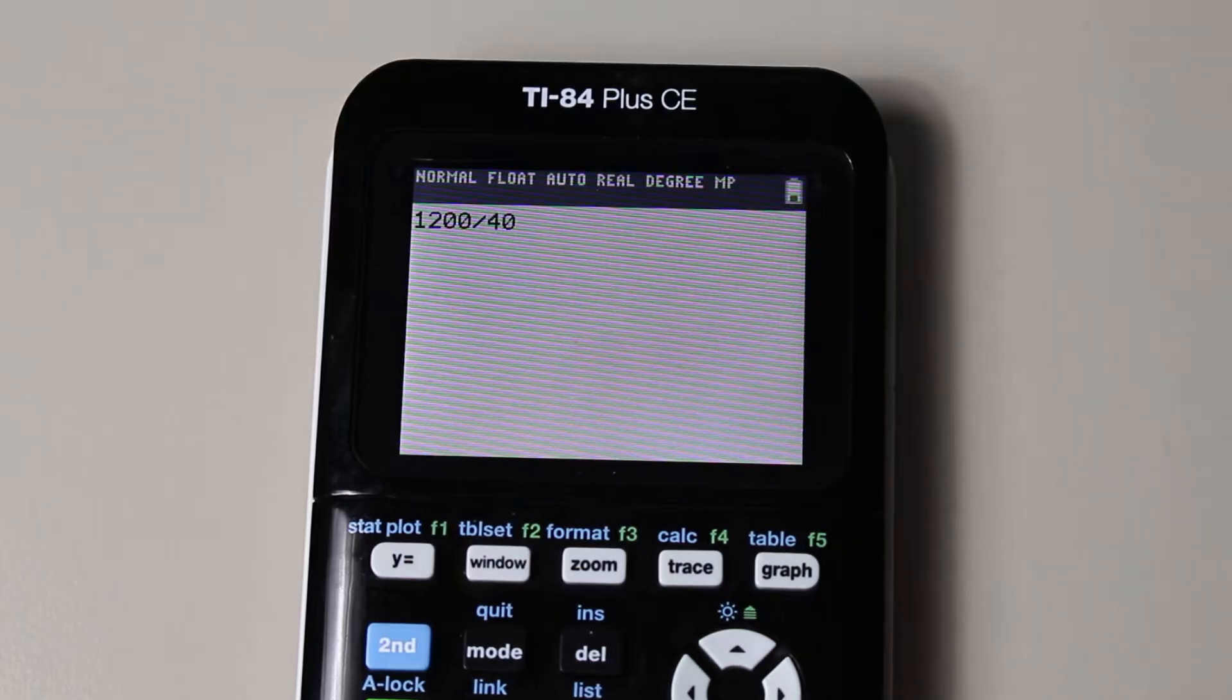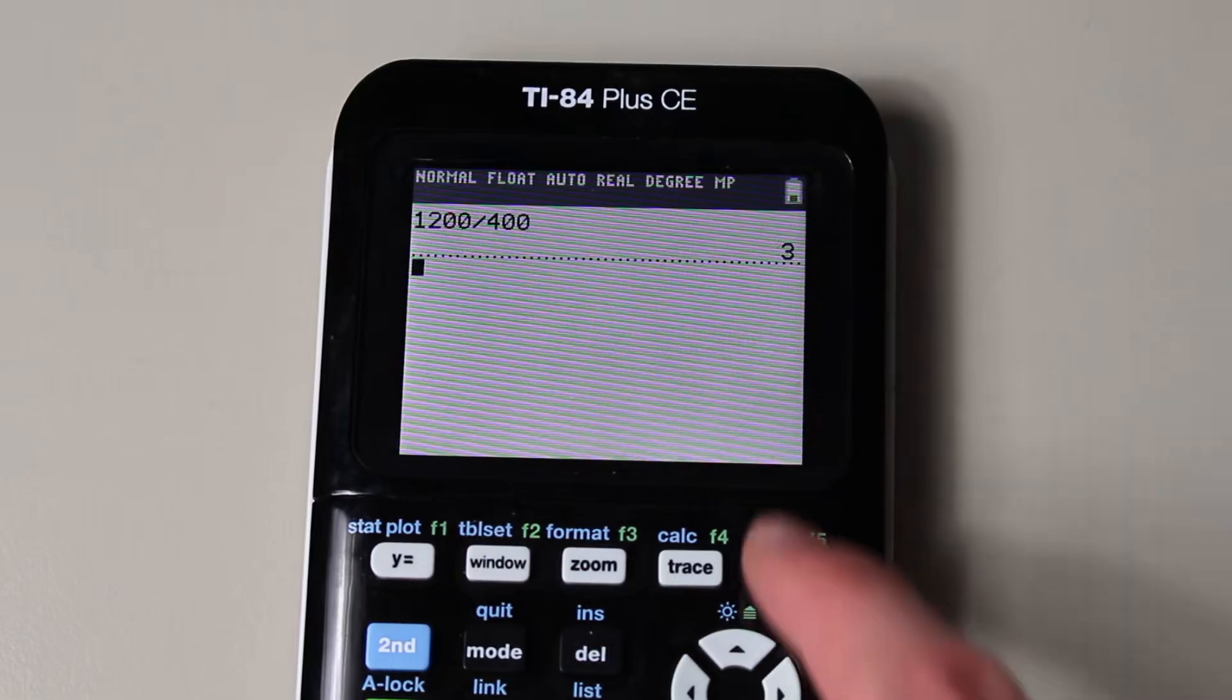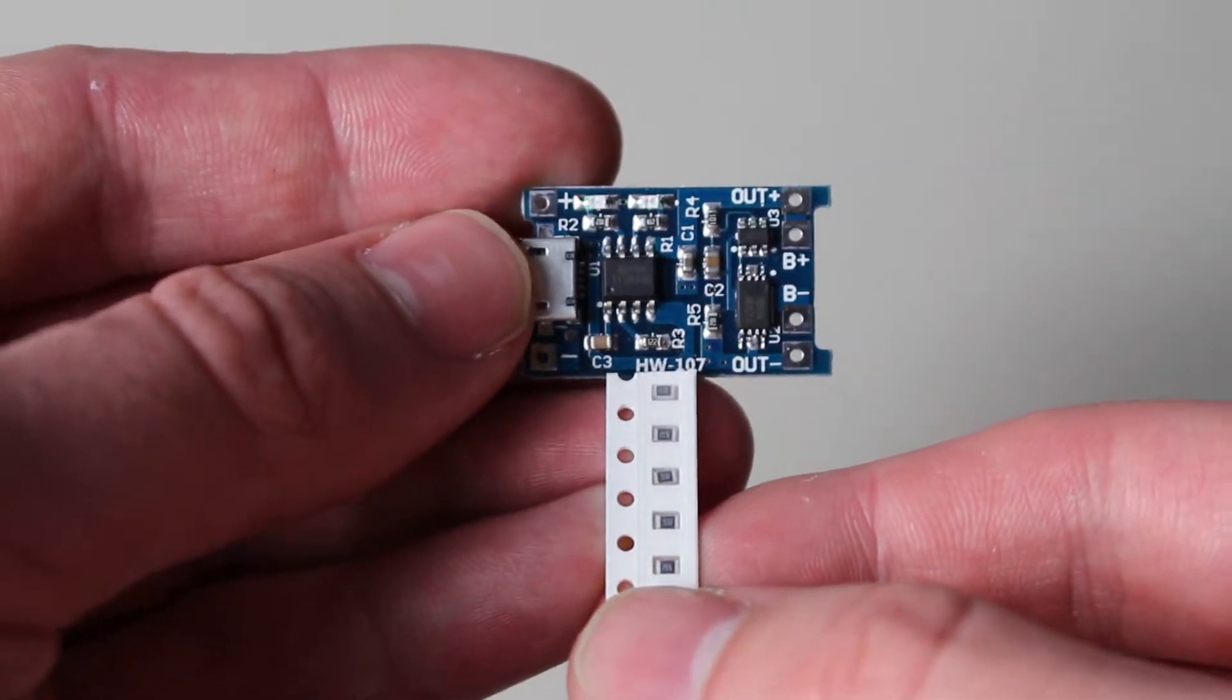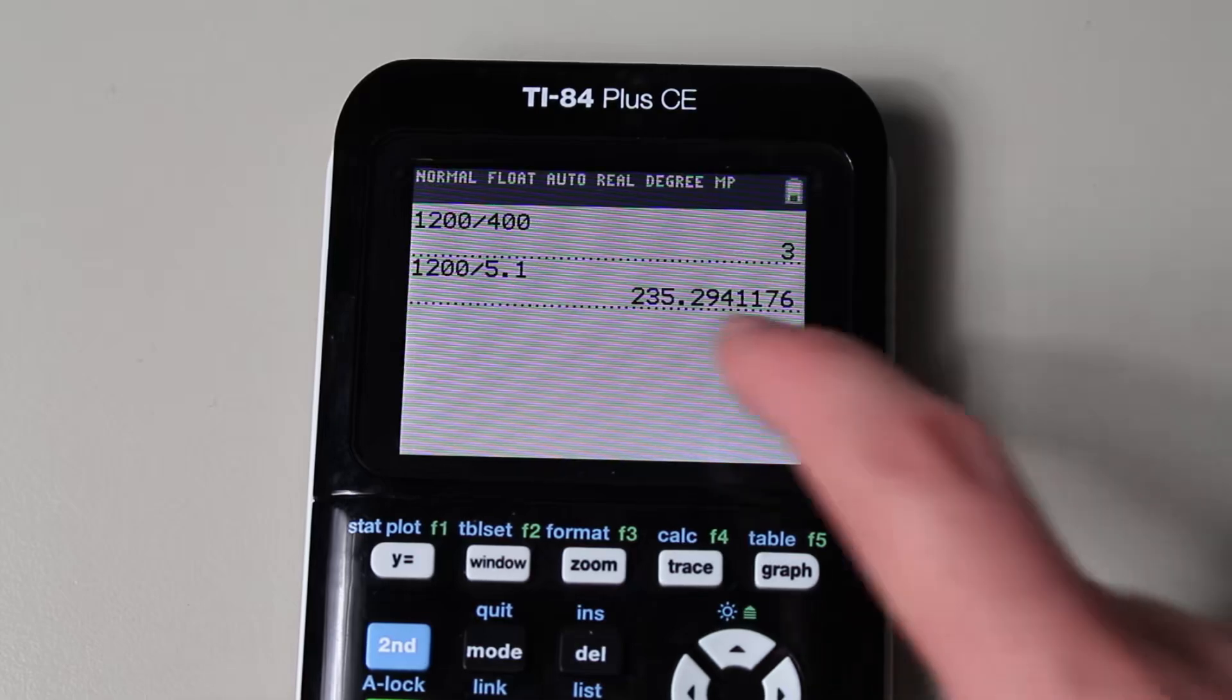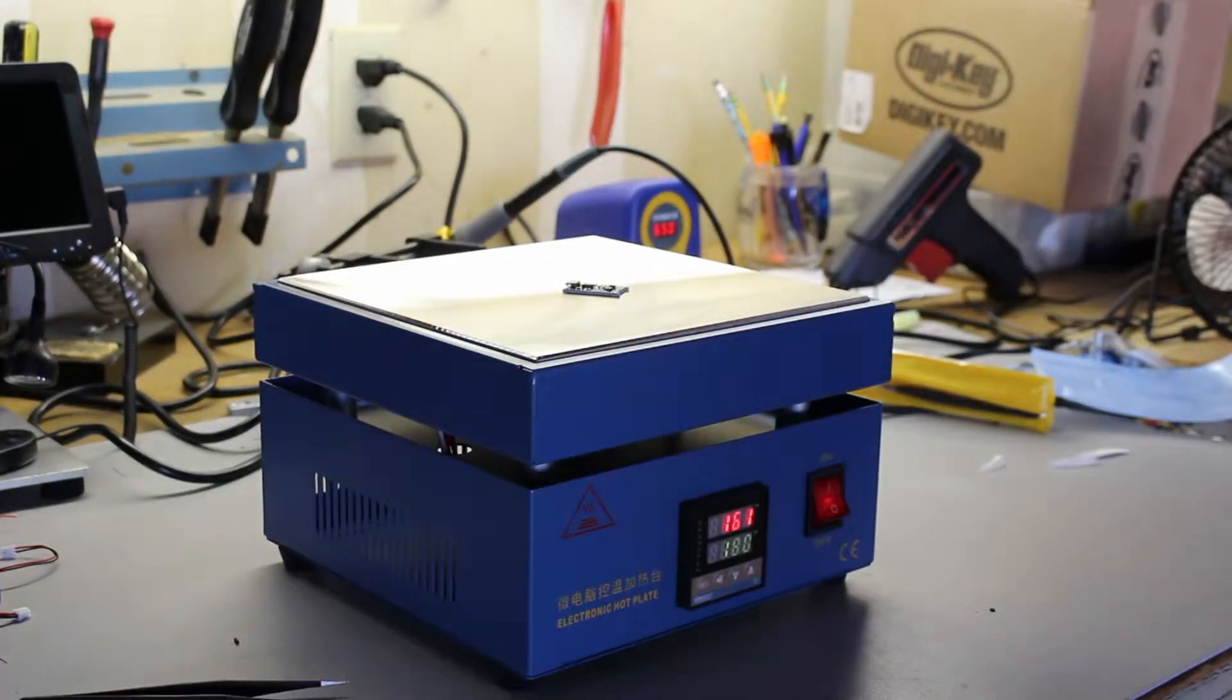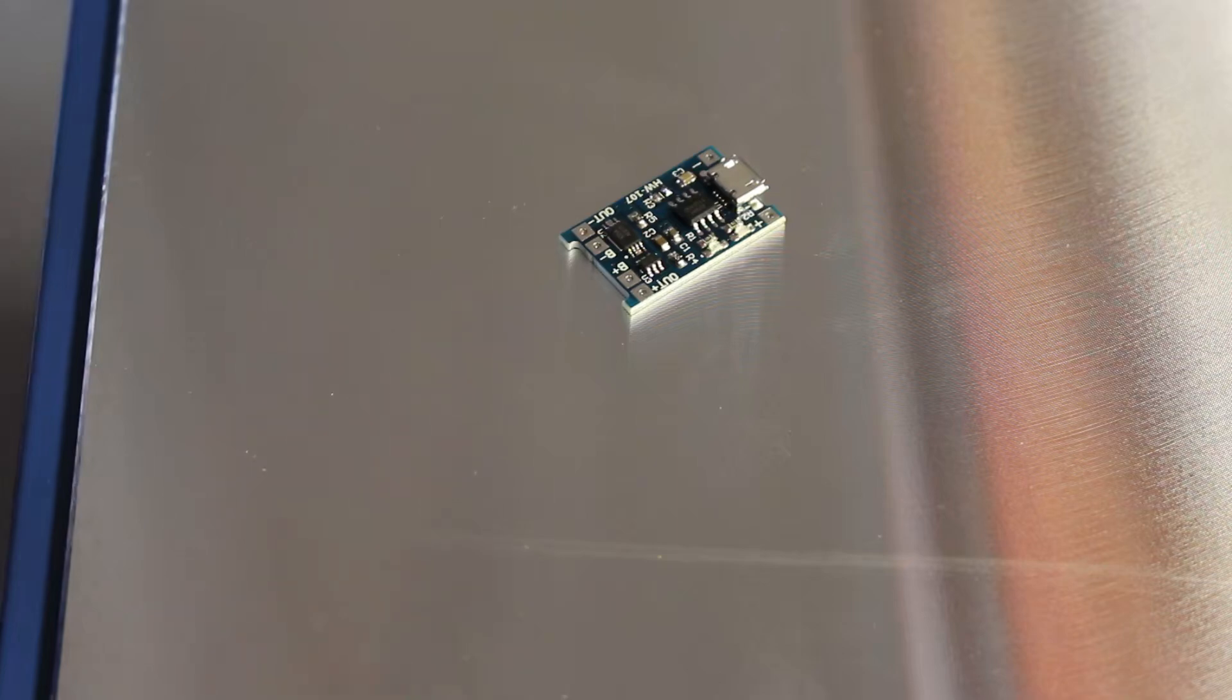But I don't have any 3K SMD resistors. But I do have one 5K resistor, which gets a current of 235 milliamps. This will mean slower charging, but it will still work. And after soldering the old one and placing the new resistor, we are ready to start testing.